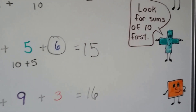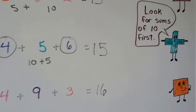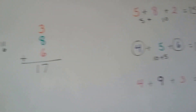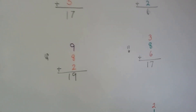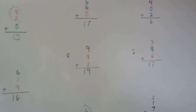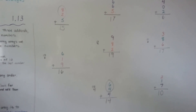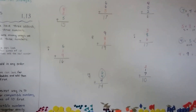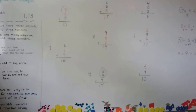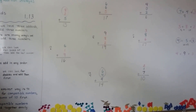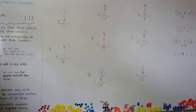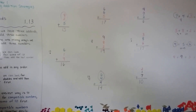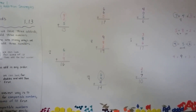Just remember to look for sums of ten first, because that can help you go quicker — they're easier to add. So those are three addends. It doesn't matter what order we add them in. We can look for sums of ten and can also look for doubles to help us. In the next video we'll see what happens when we have missing addends. I hope I'll see you there — bye!